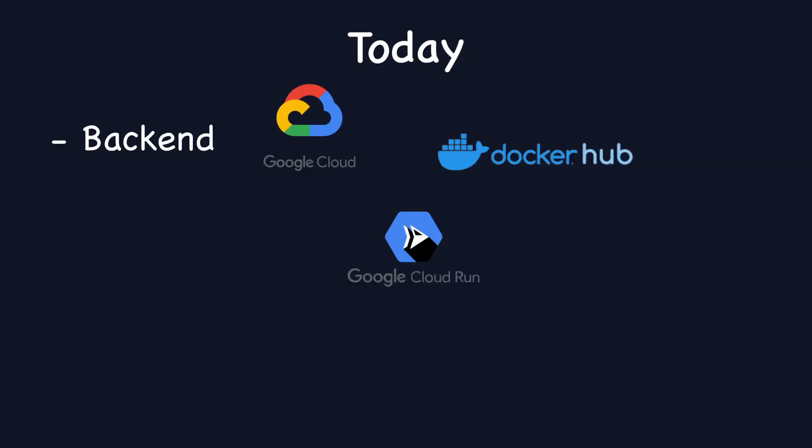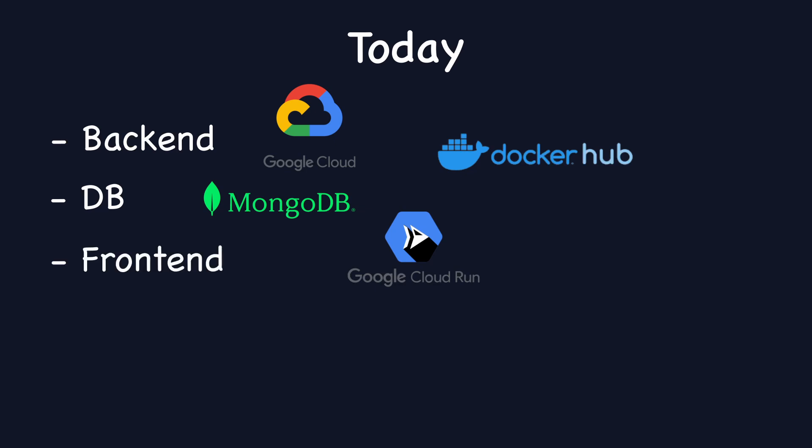That was for the past. Now today, we'll set up Google Cloud Platform, Cloud Run, and Docker Hub for the backend. Then use MongoDB Atlas to set up the database. After this, we'll leverage the same Cloud Run and Docker Hub, but for the frontend. And finally, check how our application works in the cloud.